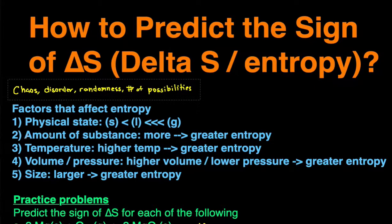The second factor that affects entropy is the amount of substance. The more substance we have, the greater the entropy will be. For example, if we have one mole of substance versus two moles of substance, then the two moles will have greater entropy than the one mole.